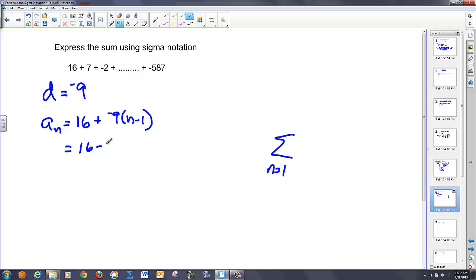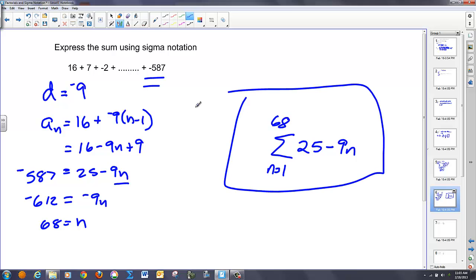So my equation is 16 minus 9n, plus 9, or 25 minus 9n, and I'm going to put that into my a sub n spot in sigma notation. And now, I have to find out how many terms there are in this sequence. Well, I have my explicit formula, a sub n, and if I want to know the number of terms, then I better put the nth term, or negative 587, into the a sub n spot. And that will give me the subscript of this number. I'll go through and subtract 25 from negative 587, and that's going to get me negative 612. It's equal to negative 9n, and divide that by 9, and I get 68 as my value of n. So I can put 68 up here, and I will have written that sequence in sigma notation.